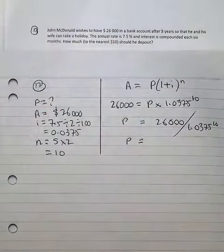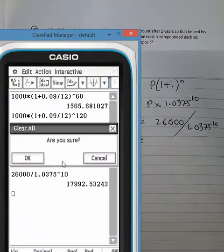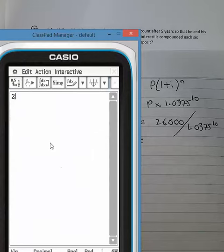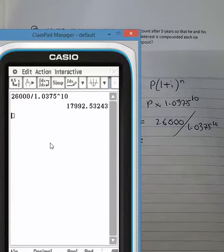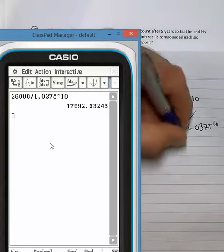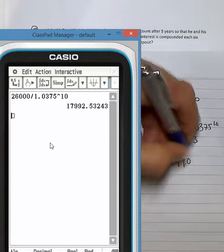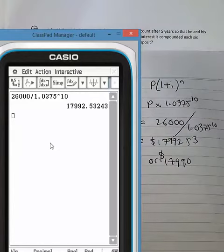And when I do that on my calculator, I end up with $17,992.53. And to the nearest $10, that's $17,990.